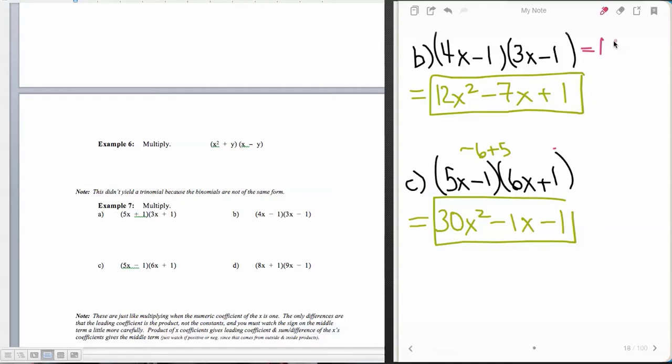But if we FOIL these, 4 times 3 which gives us 12x squared, and then we have outsides which are 4 times a negative 1 which gives us a negative 4x, and then a negative 1 times a 3 which gives us a negative 3x, and then finally a negative times a negative which is a positive here. And so we have 12x squared and then negative 3 and a negative 4 which is a negative 7x and then plus 1.